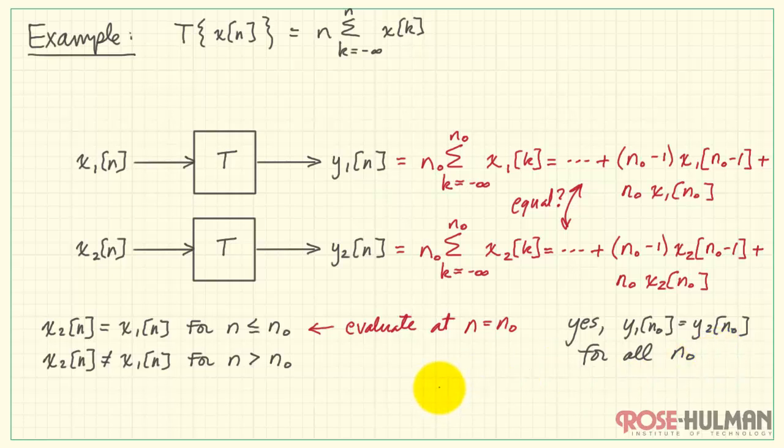So we see that, yes, indeed, Y1 of n naught is equal to Y2 of n naught for all possible choices of n naught. Therefore, we conclude this system is causal.